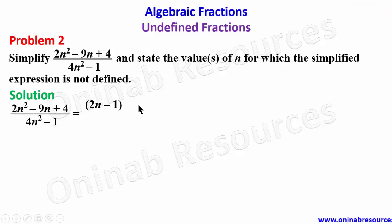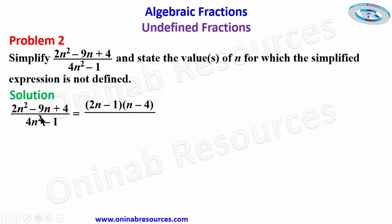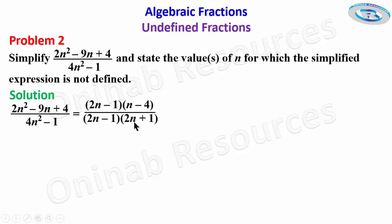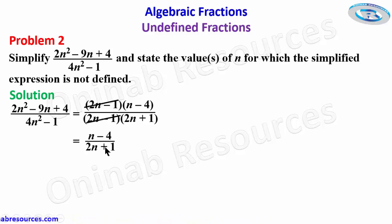The denominator 4n² − 1 is a difference of two squares, since 4, n², and 1 are all perfect squares. The square root of 4 is 2, so it factorizes as (2n − 1)(2n + 1). The common factor (2n − 1) cancels, leaving the simplified expression as (n − 4) over (2n + 1).